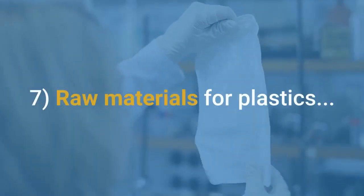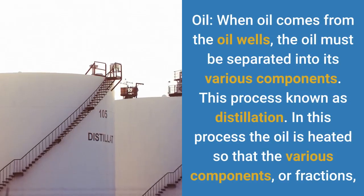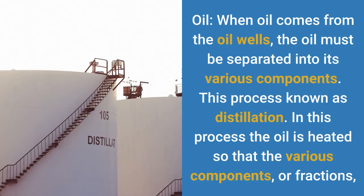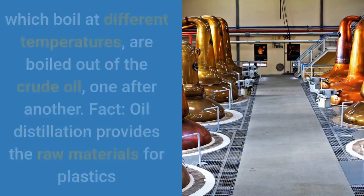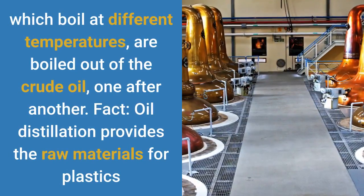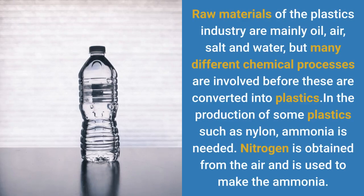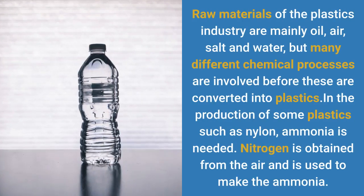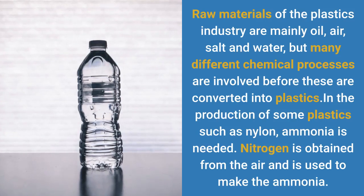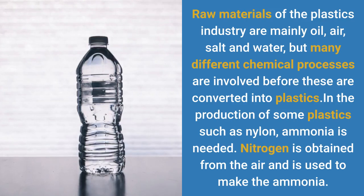Raw materials for plastics. When oil comes from the oil wells, it must be separated into its various components — a process known as distillation. In this process the oil is heated so that the various components, or fractions, which boil at different temperatures, are boiled out of the crude oil one after another. Oil distillation provides the raw materials for plastics. Raw materials of the plastics industry are mainly oil, air, salt and water, but many different chemical processes are involved before these are converted into plastics. In the production of some plastics such as nylon, ammonia is needed. Nitrogen is obtained from the air and is used to make the ammonia.